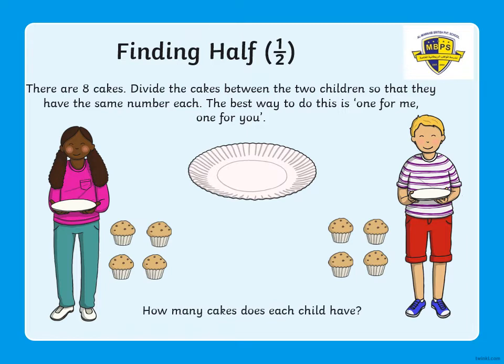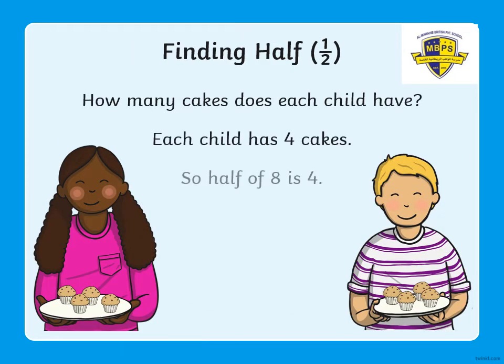I hope you have got the answer. On this slide we can see eight cakes divided between two children so that they have the same number each. Division means to share equally — one for me and one for you. So what is eight divided by two? Your answer is correct — eight divided by two is four. After dividing eight cakes equally, the girl has four cakes and the boy also has four cakes. So the half of eight is four.